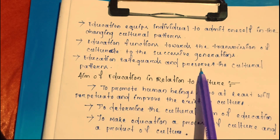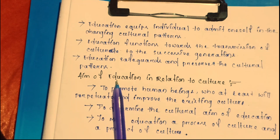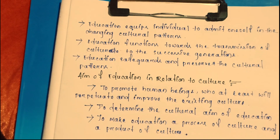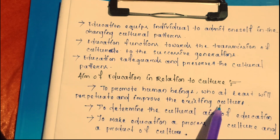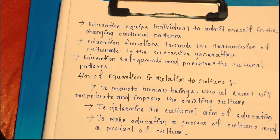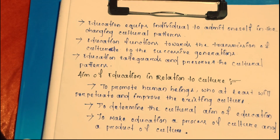Education safeguards and preserves cultural patterns. The aim of education in relation to culture is to promote human beings who will perfect and improve the existing culture. Education helps us promote our culture so that we improve and understand it. To determine the cultural aim of education: the aim of education is to make education both a process of culture and a product of culture.